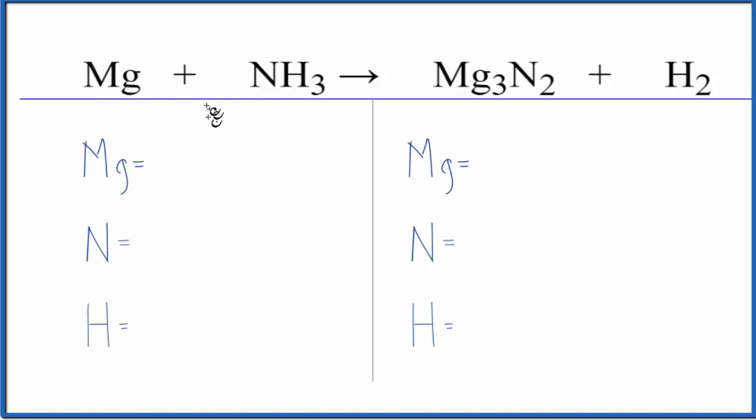To balance the equation, let's count the atoms up on each side. We have one magnesium, one nitrogen, and three hydrogen atoms. On the product side, three magnesiums, two nitrogen atoms, and two hydrogen atoms.